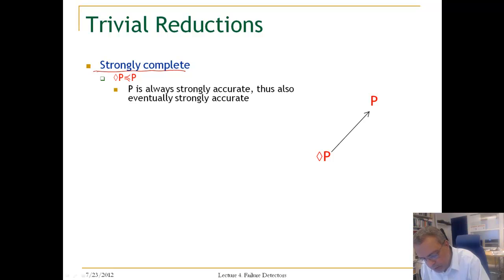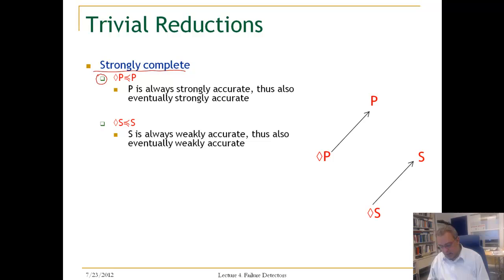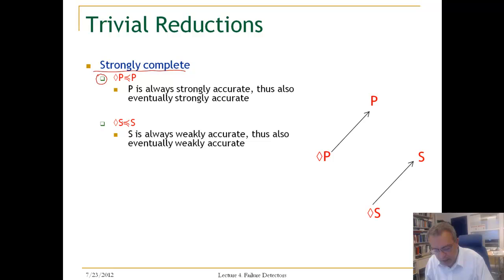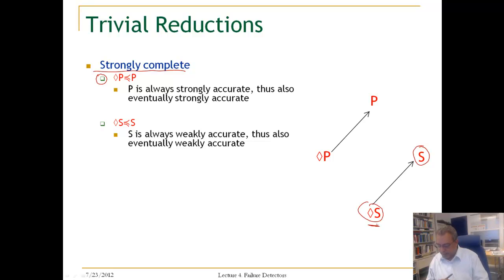Now let us look at the relationships among all eight failure detectors. Starting with the strongly complete ones: ◇P is always reducible to P, since P is always strongly accurate and thus also eventually strongly accurate. Similarly, S is always weakly accurate and thus also eventually weakly accurate, so ◇S is reducible to S.